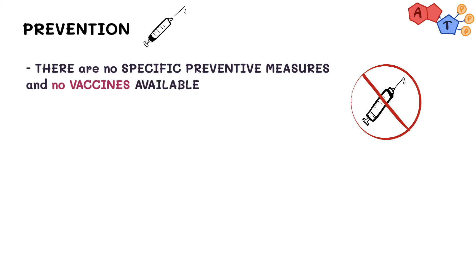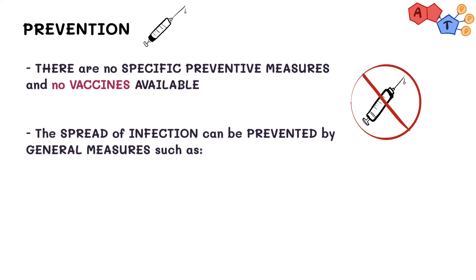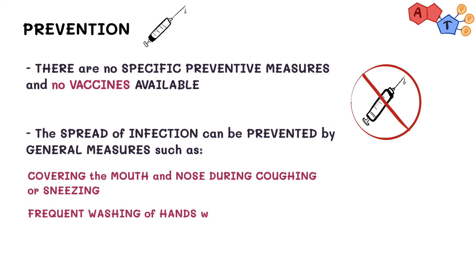However, just like many respiratory germs, the spread of mycoplasma pneumoniae infection can be prevented by simple measures such as covering the mouth and nose during coughing or sneezing, and frequently washing the hands with soap and water.